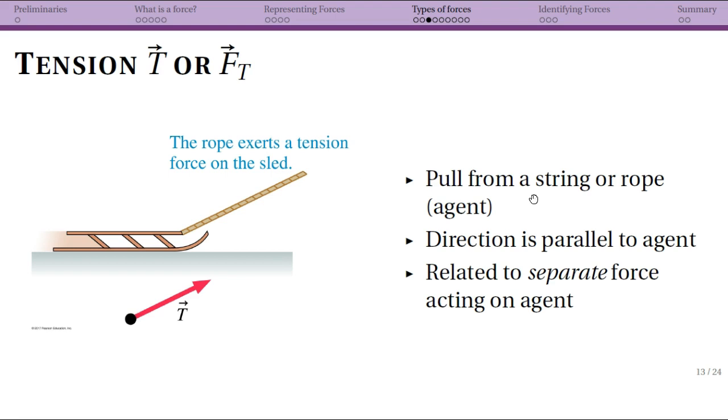Tension is going to be a pull from a string or a rope in general. You can also have tensions in chains and bars and other things. This is going to be parallel to the agent. So the tension force is acting on the sled and is pointed in the direction that the rope is pulling.